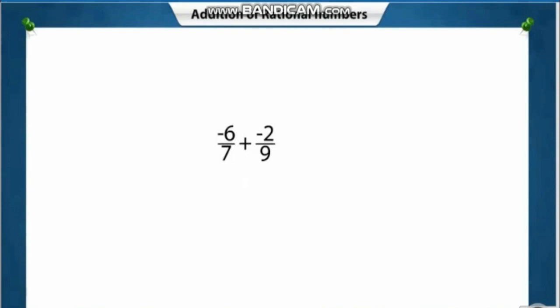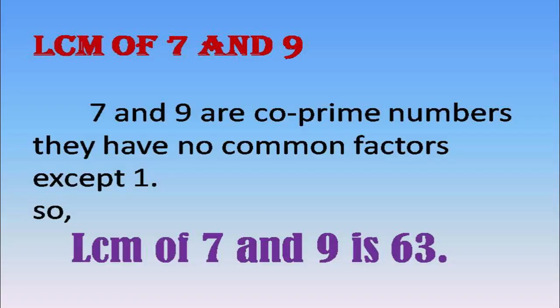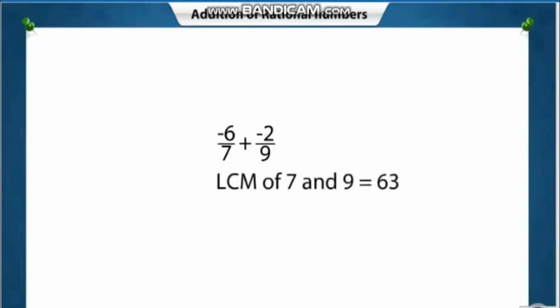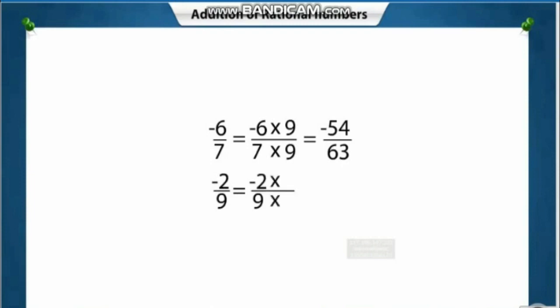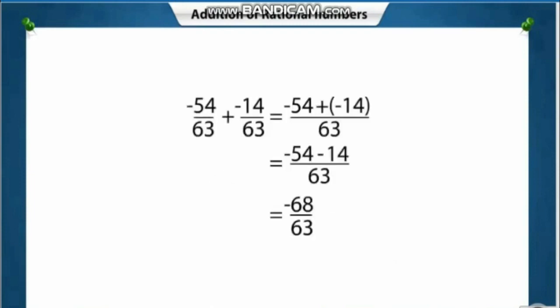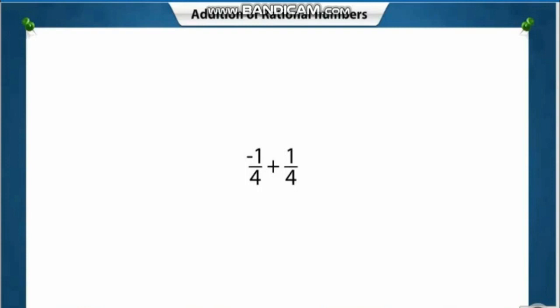Let's see another example: minus 6 by 7 plus minus 2 by 9. First, take the LCM of 7 and 9. Since 7 and 9 are co-prime numbers — they have no common factors except 1 — the LCM of 7 and 9 is 63. Multiply the numerator and denominator of each rational number: minus 6 by 7 times 9 gives minus 54 by 63, and minus 2 by 9 times 7 gives minus 14 by 63. Now add the numerators to get minus 68 by 63.